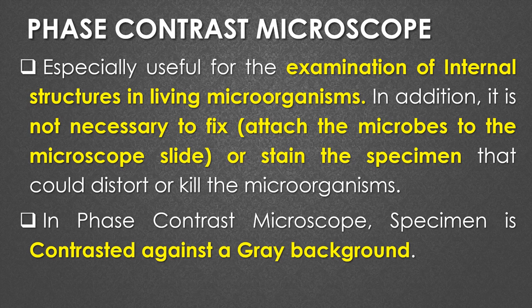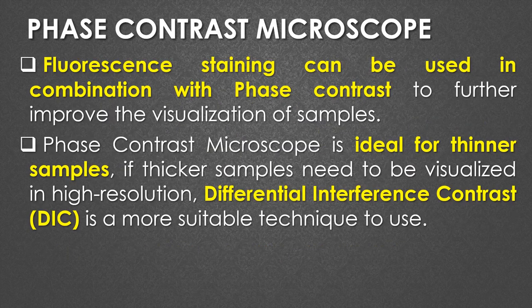Without doing heat fixation and staining, we can directly visualize the organisms under the phase contrast microscope. In the phase contrast microscope, the specimen is contrasted against a gray background. In some cases, fluorescent stains can be used in combination with phase contrast to further improve the visualization of the samples.